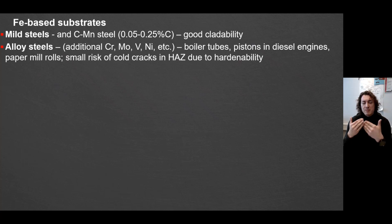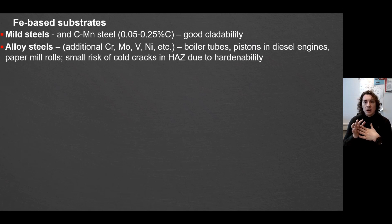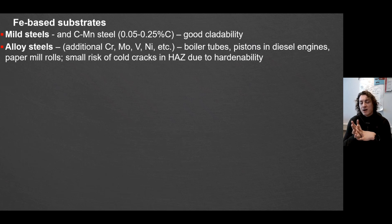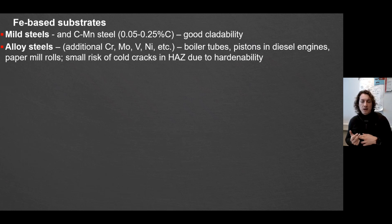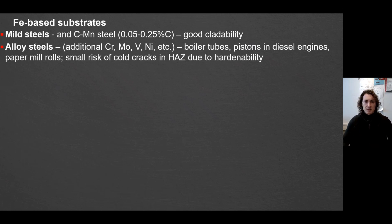However, if you go deeper, the primary group of materials mostly uses alloy steels with an additional amount of certain alloying elements like chromium, molybdenum, vanadium, nickel, and others. Those substrates are typically found in boiler tubes and pistons, and there you already get a small risk of cracks in the heat affected zone because of hardenability. In that case you should think about how to improve interaction with your substrate by preheating, by using a buffer layer, or by selecting the right material approach.